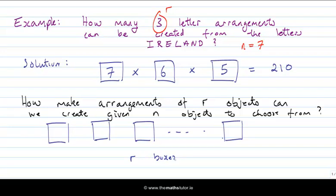We have r boxes and n objects to choose from, so we count the choices in each box carefully. In the first box we have n choices. In the second box we've used up one choice, so we have n minus one. In the third box we've used up two, so we have n minus two. We keep going until we get to the rth box. Writing it out: the first box has n (that is, n minus zero), the second has n minus one, the third has n minus two.